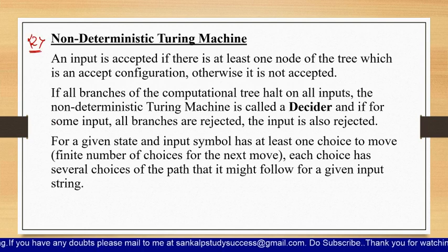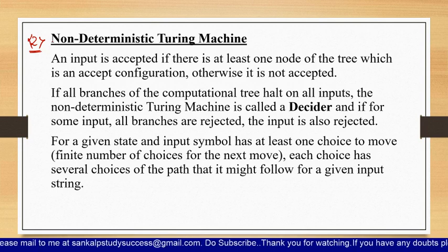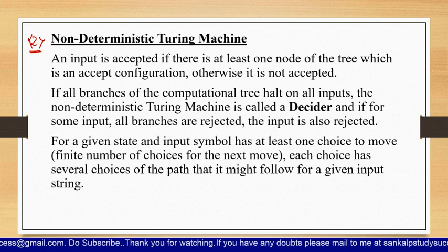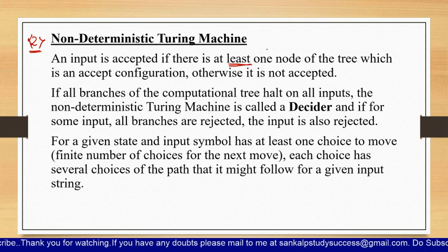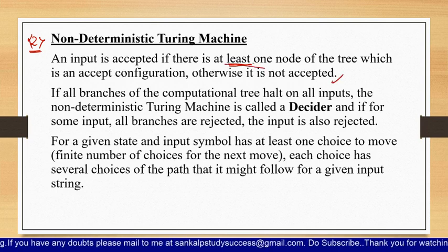The second type is the non-deterministic Turing machine. If you have watched previous videos on the subject, you will have come across deterministic and non-deterministic terminology. Non-deterministic means having several transitions; if you have several transitions then it is a non-deterministic Turing machine, while a unique single transition makes it a deterministic Turing machine. An input is accepted if there is at least one node of the computational tree that is an accept configuration; otherwise it is not accepted.